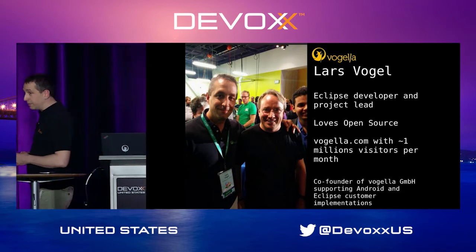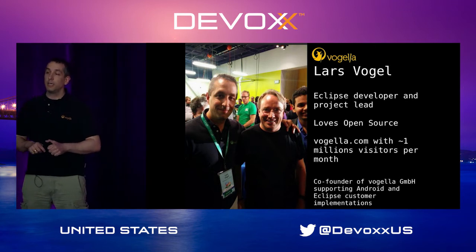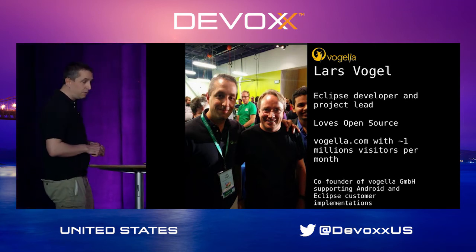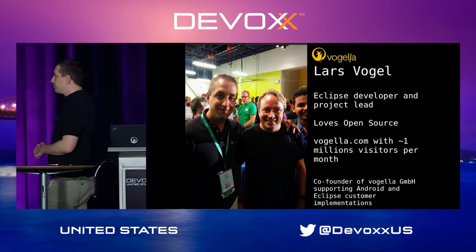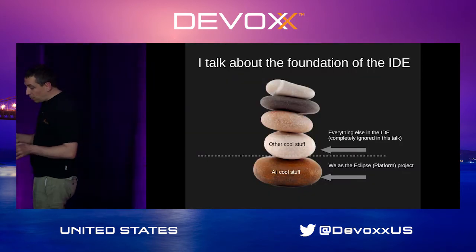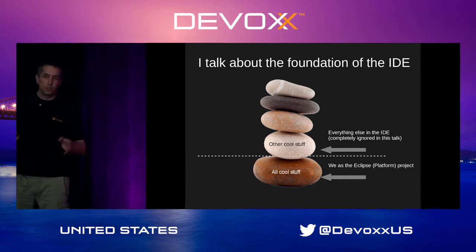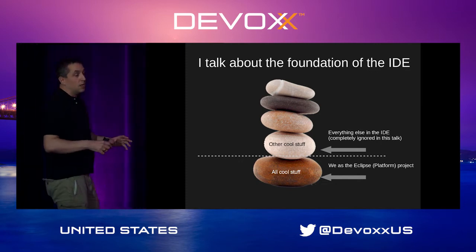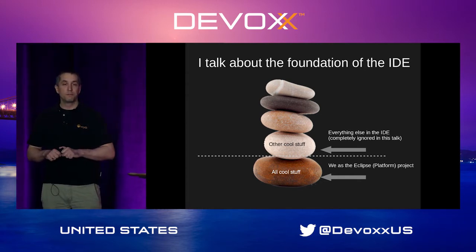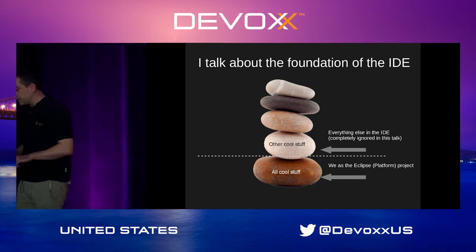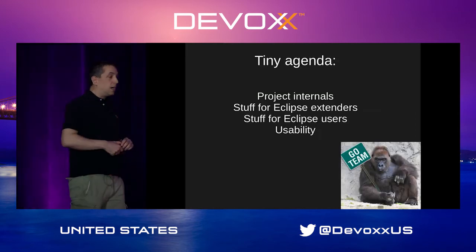My name is Lars Vogel and I'm going to present this — it's of course the work of many people. I'm one of the Eclipse developers, I love open source, and I try to help as much as I can with the Eclipse project. We also have a popular website with Android and Eclipse related content. In this talk I focus on the foundation used to build any Eclipse IDE, called the Eclipse top-level project, which is responsible for the Java tooling, the framework, and any other tooling built on top of it.